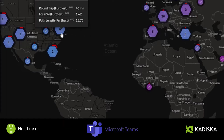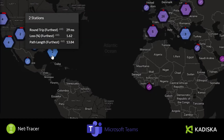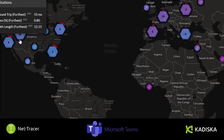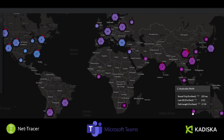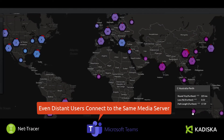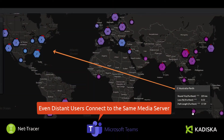For example, here I have a round-trip time of 46 milliseconds, from here 29 milliseconds, from here 55 milliseconds. But you can see that when users located in Australia have to take part in Microsoft Teams sessions using these media servers, they can experience very poor call quality.